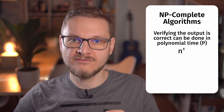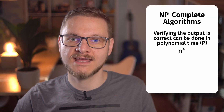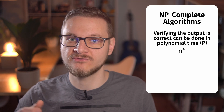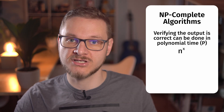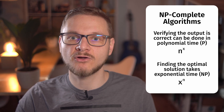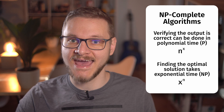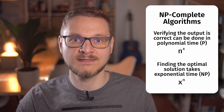For some computational problems, there are only solutions known that have to try out every possibility to find the correct or optimal solution in the worst case. This class of algorithms is called NP-complete. While verifying that the correct solution was found can be done in polynomial time — meaning you only need n to the power of x basic operations to perform the check — finding the solution employs a brute force search which takes exponential time, meaning that n is in the exponent and not in the base.